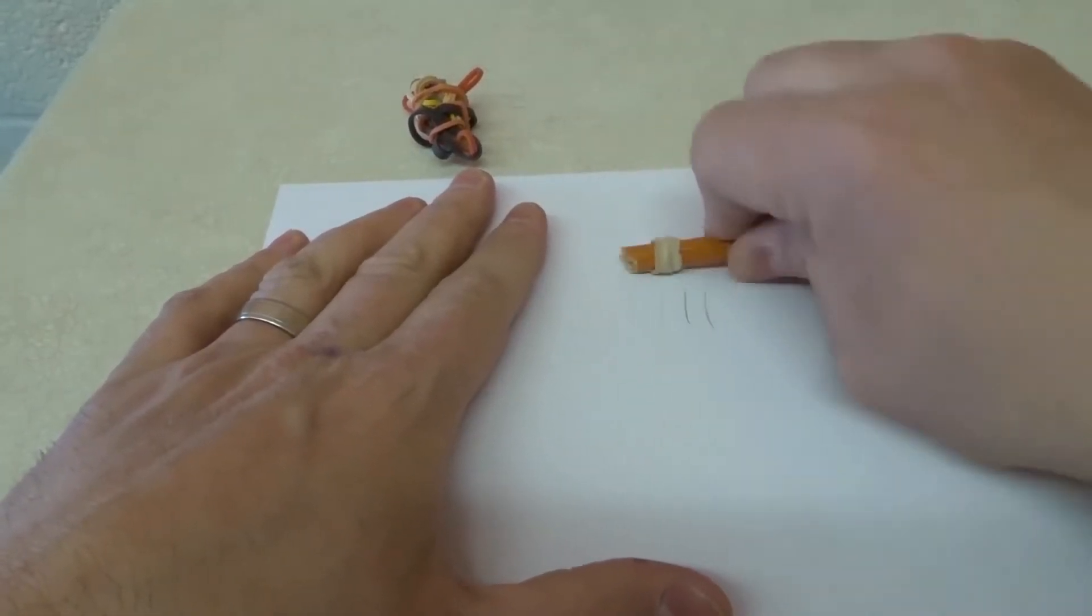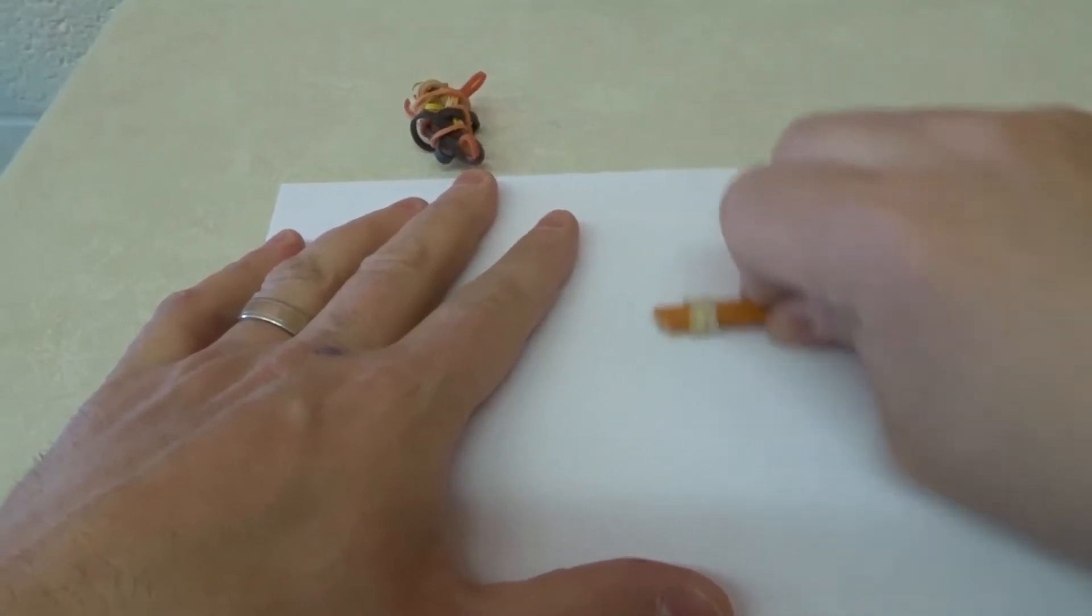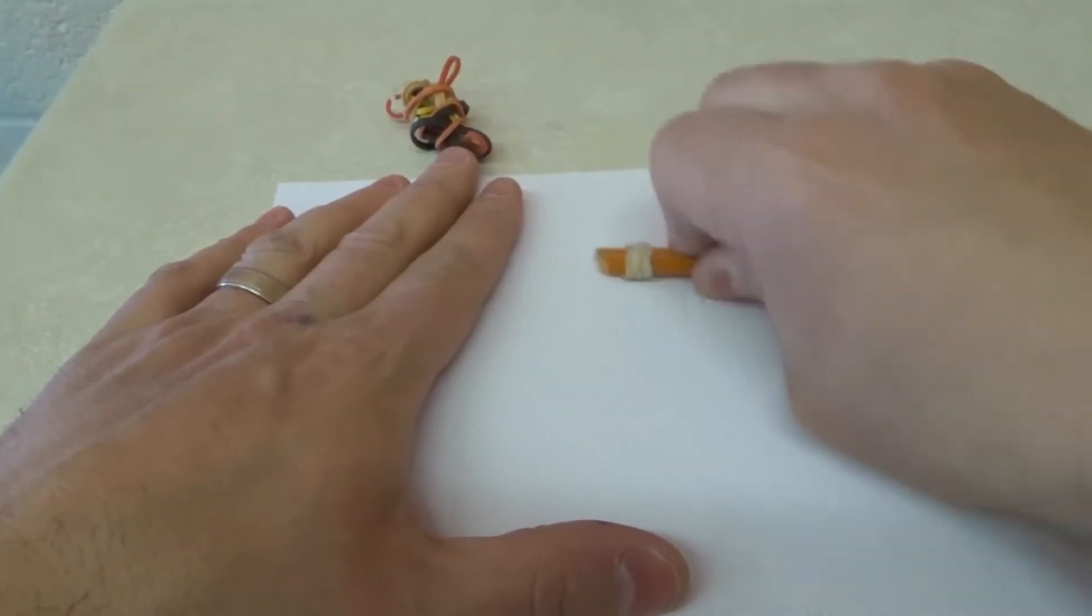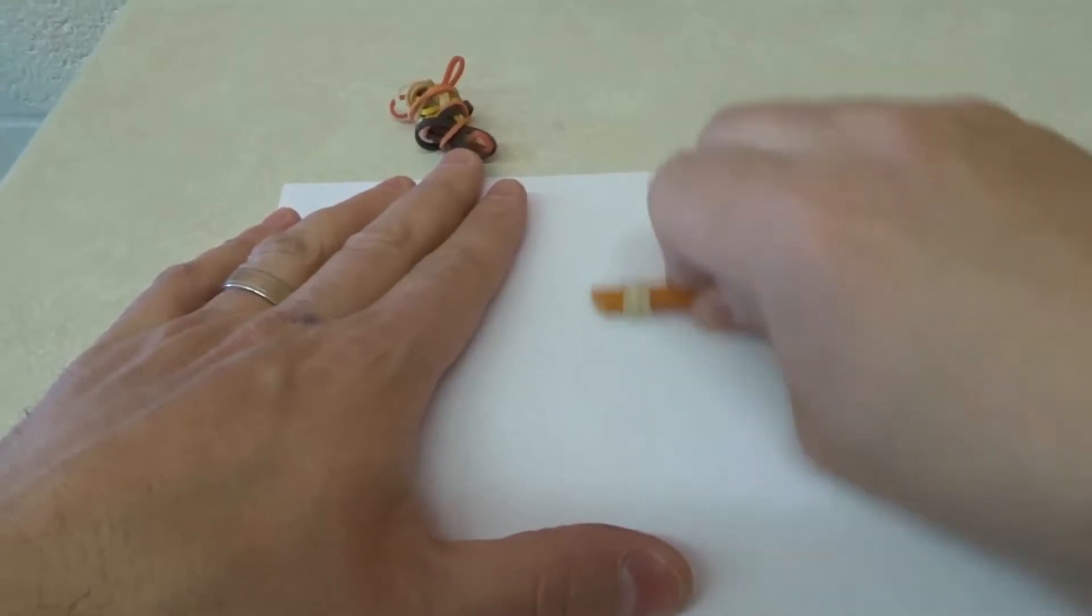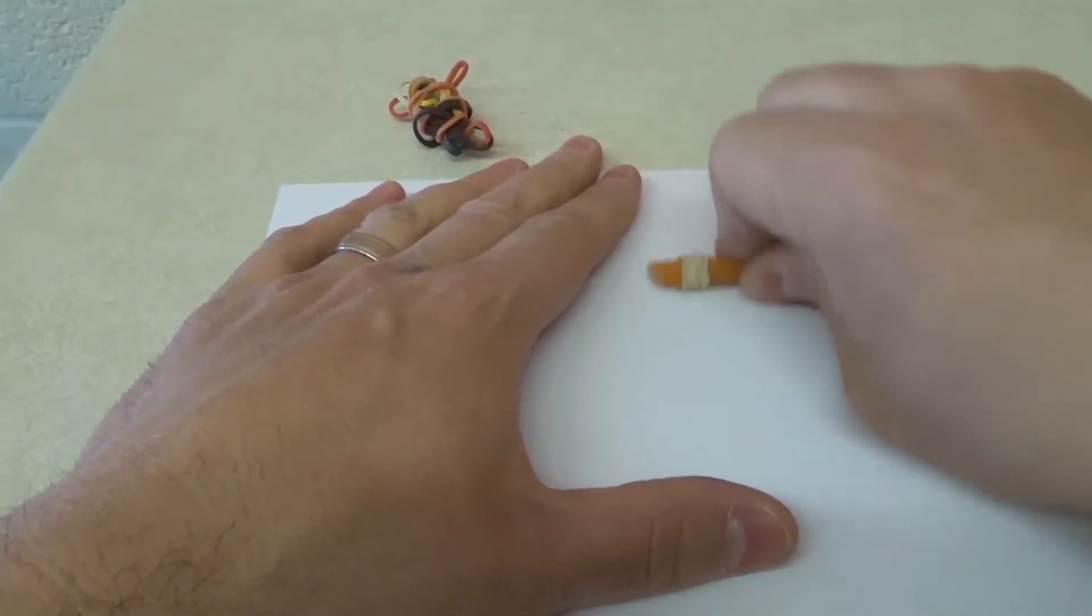Now, does it erase it absolutely perfectly? No, you can see there is still a faint line, obviously. I'm not sure if I kept going and going, if it would eventually erase it perfectly. It's getting more and more faint, but it's not going to do as good of a job as an eraser.